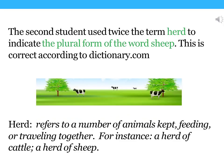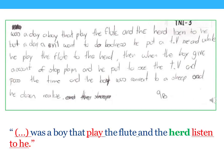Let's see how other students use the same word. The second student used twice the term 'herd' to indicate the plural form of the word sheep. This is correct, according to dictionary.com: 'There was a boy that played the flute and the herd listened to him.'